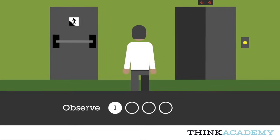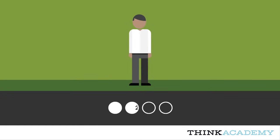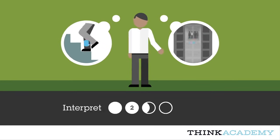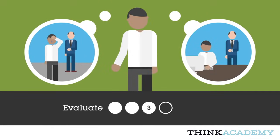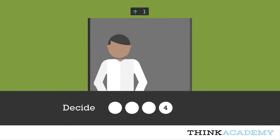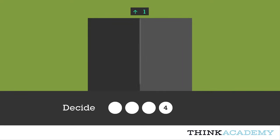First, we observe visible phenomena and bodies of evidence. Second, we draw on what we know to interpret what we're seeing, to generate hypotheses about what it means. Third, we evaluate which hypotheses are right or wrong. Finally, we decide, choosing the option that seems best and acting accordingly.